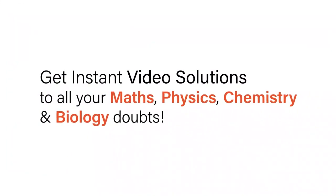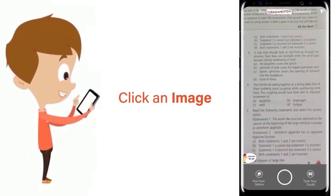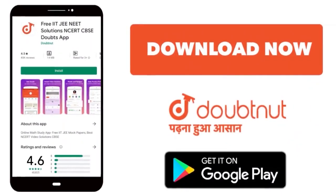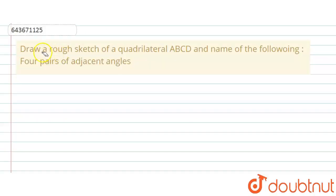With DoubtNet, get instant video solutions to all your maths, physics, chemistry, and biology doubts. Just click the image of the question, crop the question, and get instant video solution. Download DoubtNet app today. Hello everyone, the question says that draw a rough sketch of quadrilateral ABCD and name the following four pairs of adjacent angles.